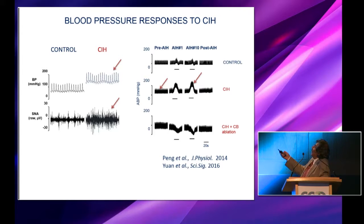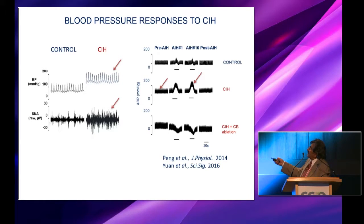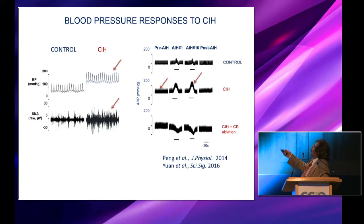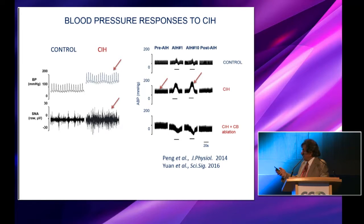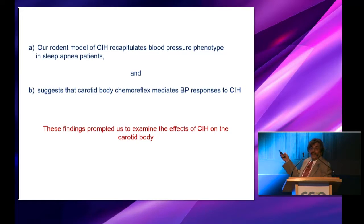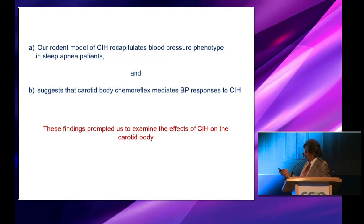Rodents exposed to 10 days of intermittent hypoxia develop high resting blood pressure and high sympathetic nerve activity. During simulated apnea, there is a marked increase in blood pressure. By selectively ablating the carotid body, blood pressure is normalized and the blood pressure spikes during simulated apneas are no longer seen. These studies establish that the rodent model of CIH recapitulates the blood pressure phenotype seen in sleep apnea patients and that the carotid body chemoreflex mediates the blood pressure response to CIH, prompting us to look at exactly what is happening to the carotid body.